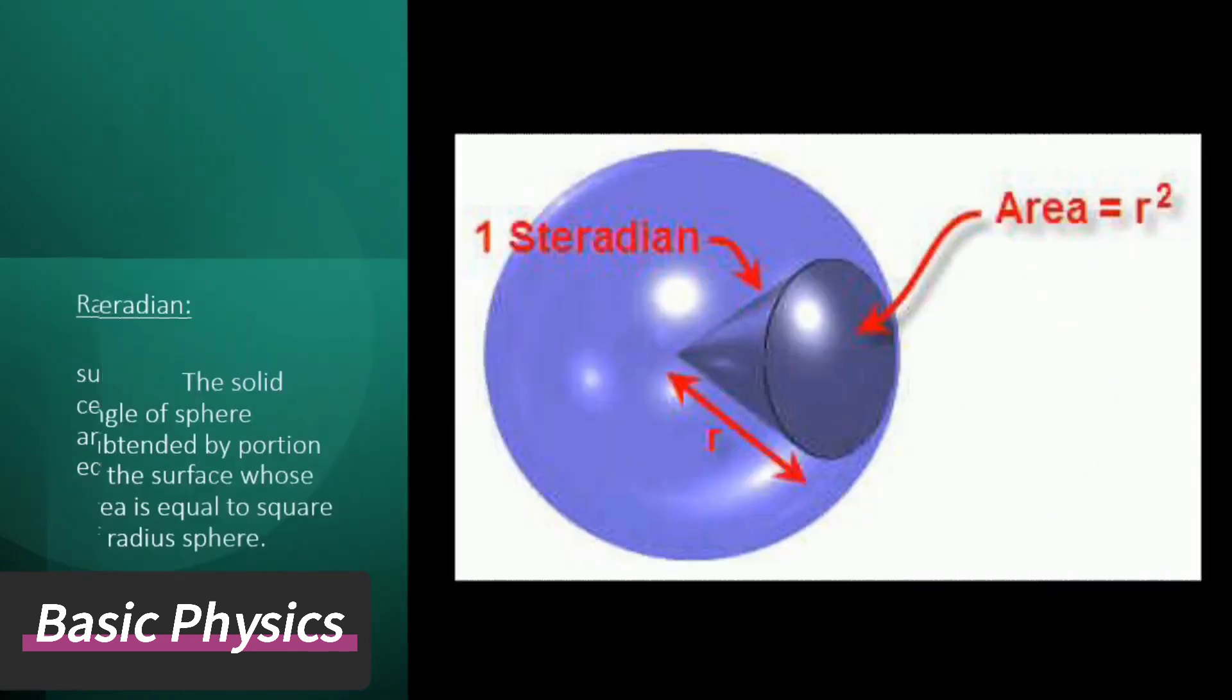Steradian is the solid angle of a sphere subtended by a portion of the surface whose area is equal to square of radius of sphere. Steradian is the three-dimensional angle as shown in figure. Thanks for watching us.